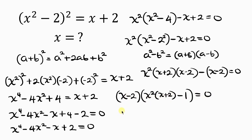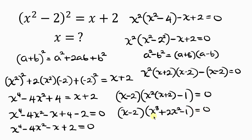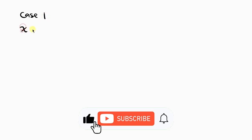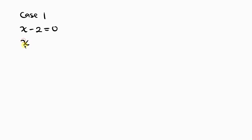Opening up the bracket: x²(x + 2) = x³ + 2x². So we get (x - 2)(x³ + 2x² - 1) = 0. This gives us two cases. Case 1: x - 2 = 0, so x = 2. That is our first value of x.